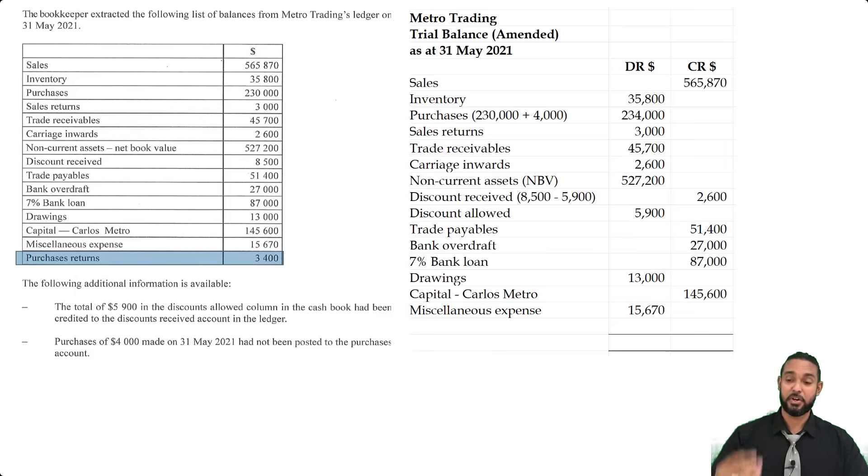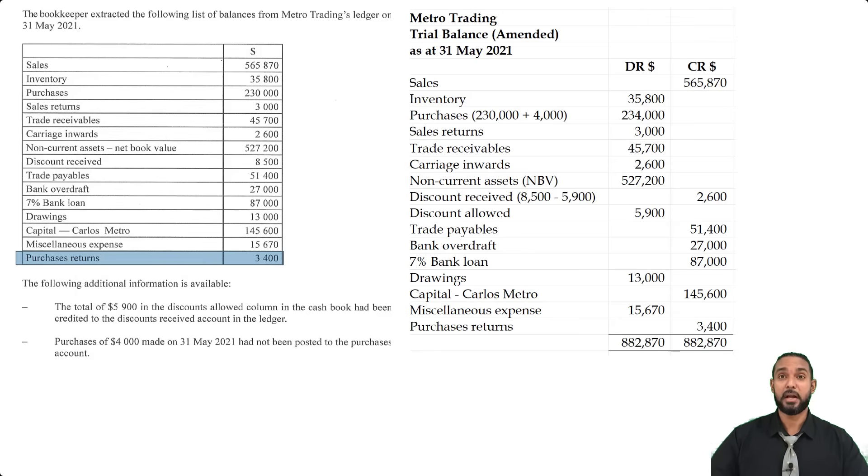And if we add up both sides we get the same figure — the trial balance agrees. So there you have it, that's the solution for question 1 from the July 2021 POA paper 2. If you want to check out any more videos, I'll put some cards up. Don't forget to subscribe and check out my website where I have some free POA handouts. Thanks so much for watching, I'll see you next time — bye!